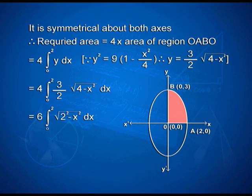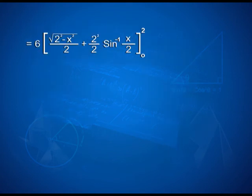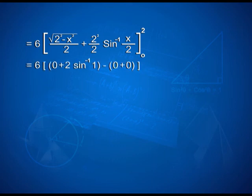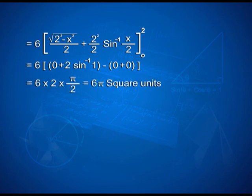On applying limits, we get 6·[x·√(4 - x²)/2 + 4/2·sin⁻¹(x/2)] from 0 to 2, which equals 6·[0 + 2·sin⁻¹(1) - 0] = 6·[2·π/2] = 6π square units.